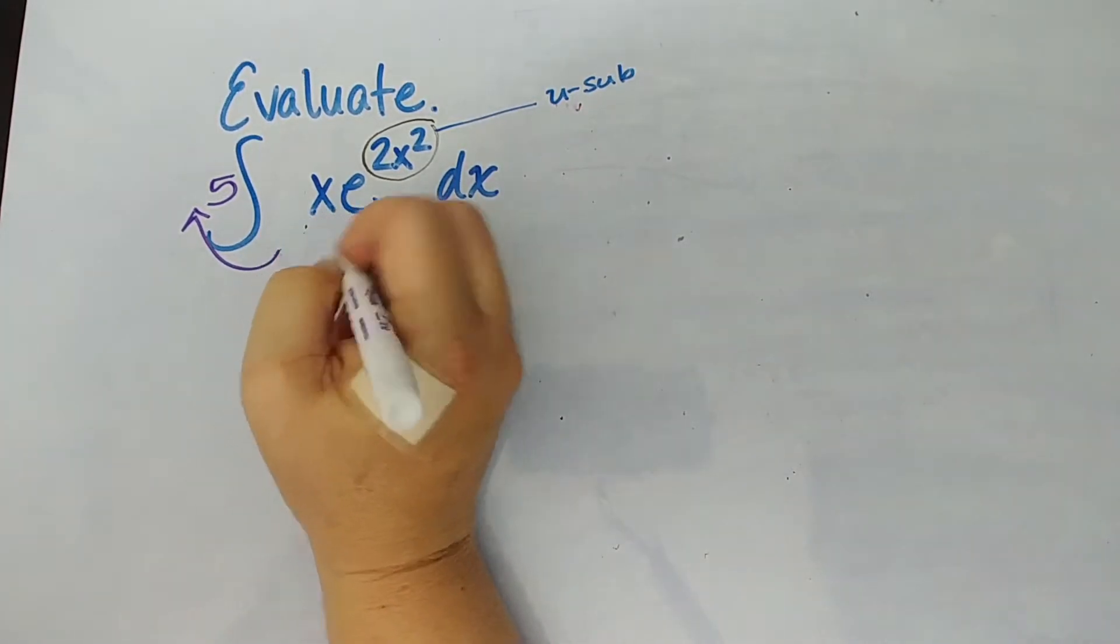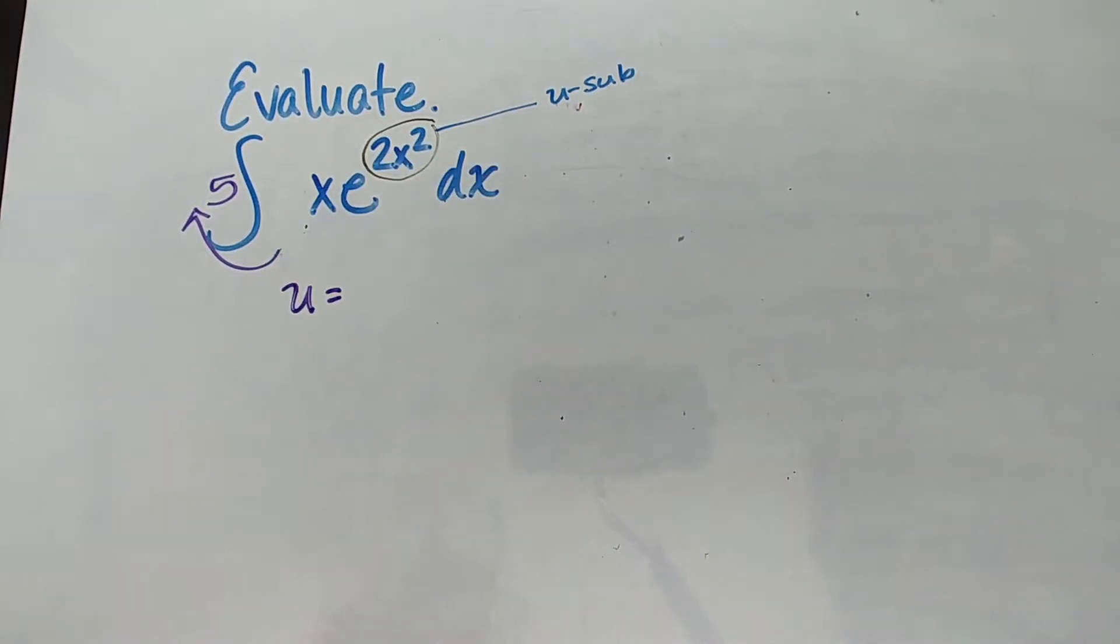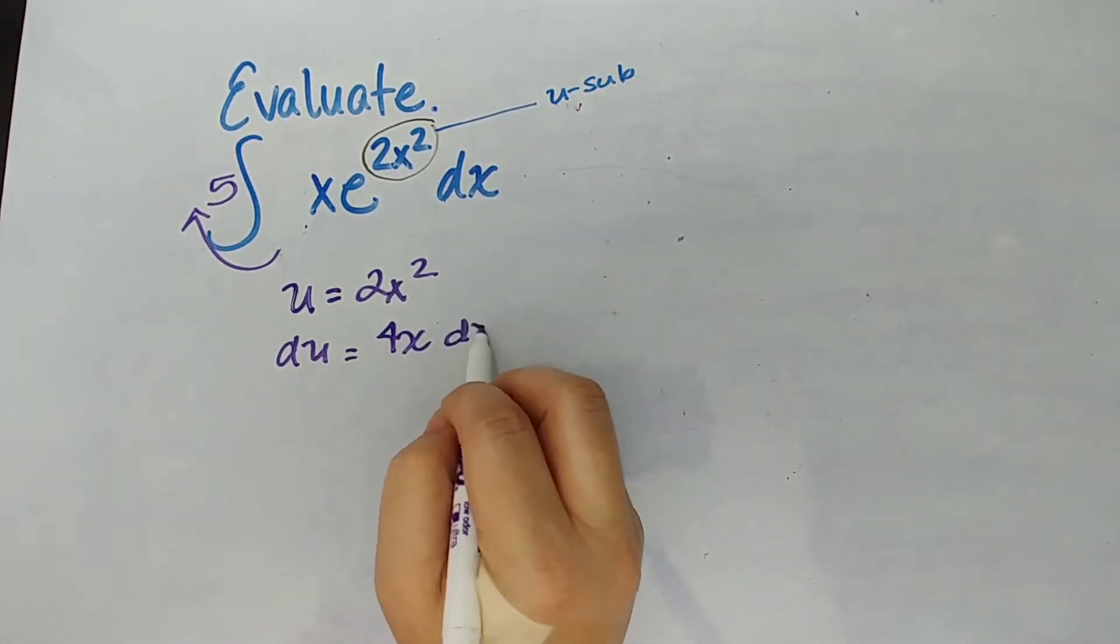So when you use u substitution you really want to see will u substitution work. If I let u be the ugliness in the exponent like Jackie just said to do then I need to know what's du. So du would be what? It would be the derivative of this 4x dx of course.